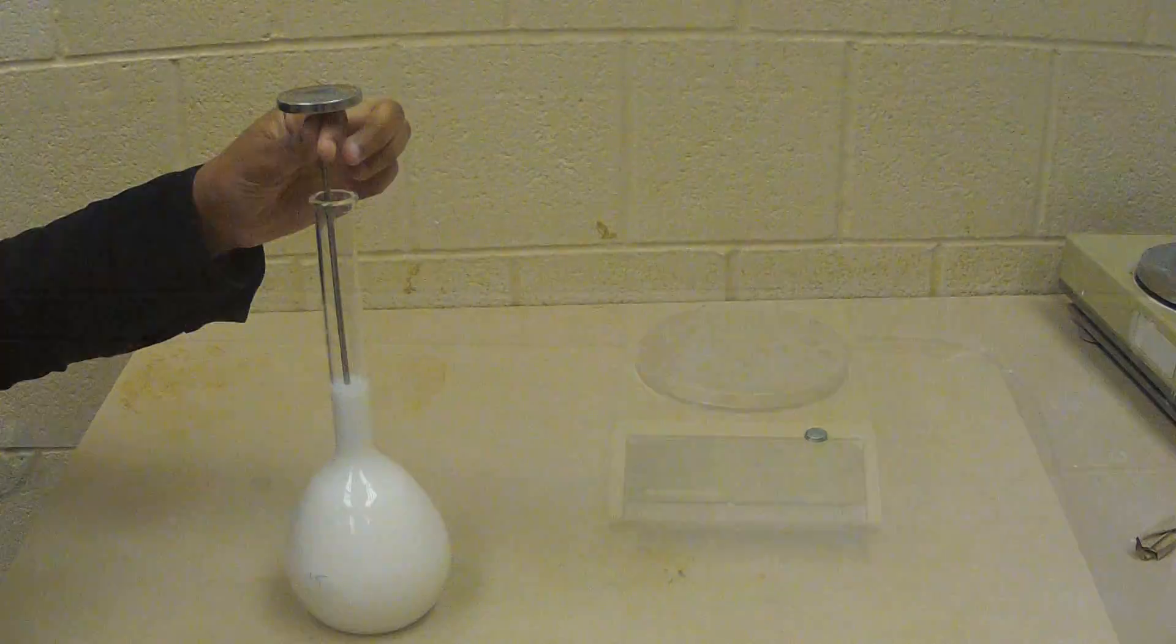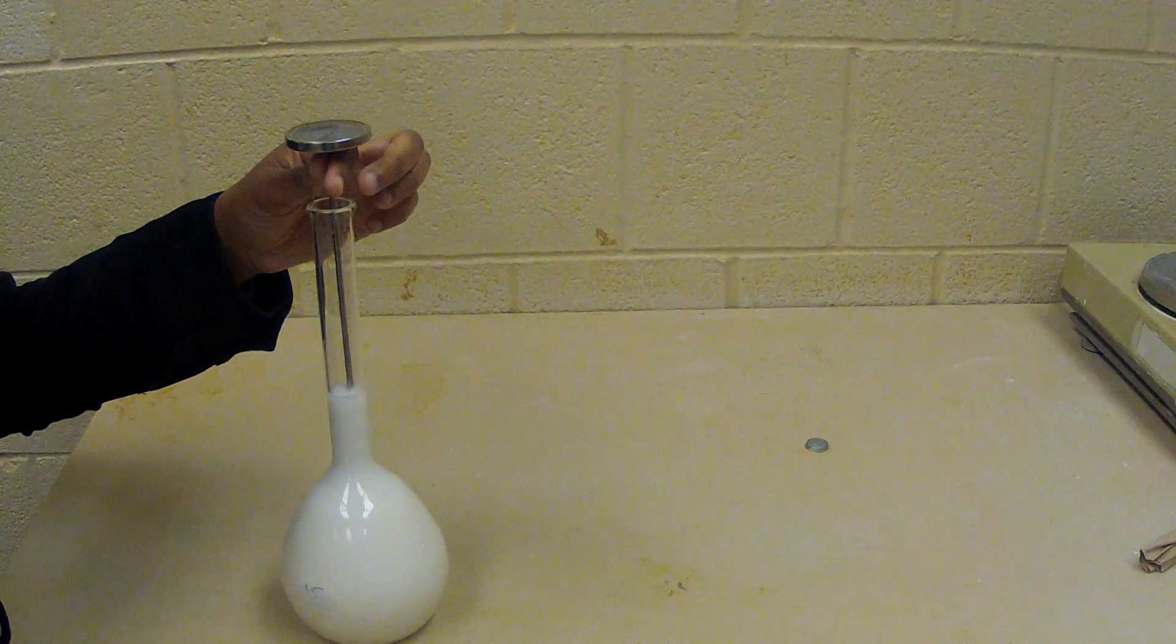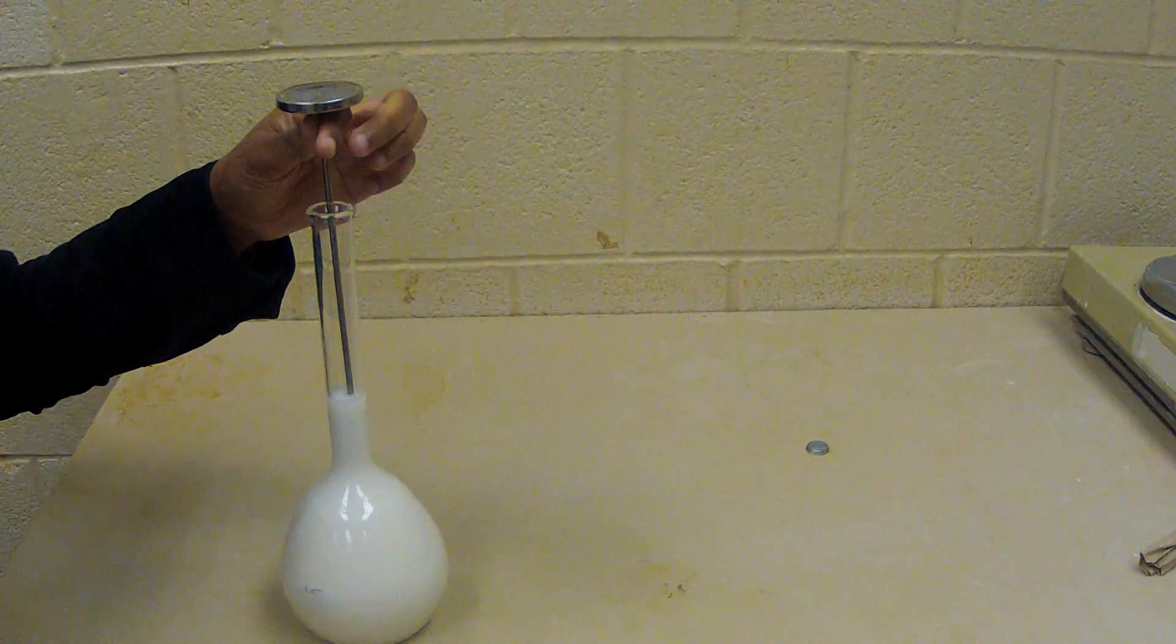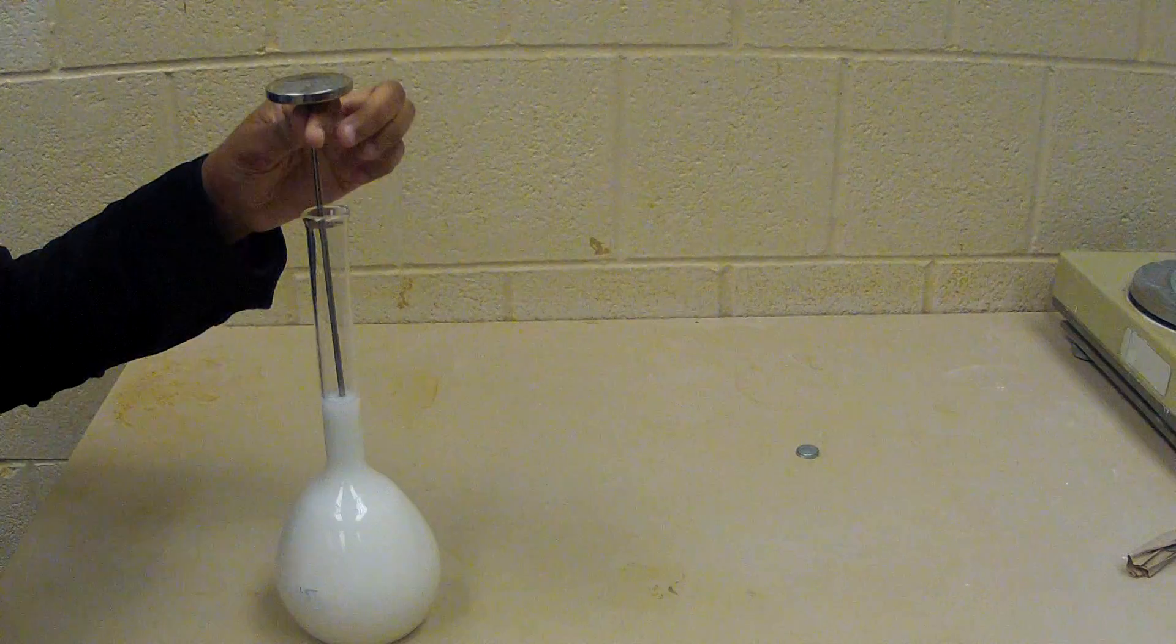Dry the inside of the stem and the exterior of each pycnometer. Measure and record the final mass of each pycnometer with the soil and water. Measure and record the test temperature of the water.